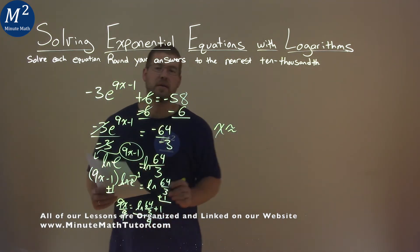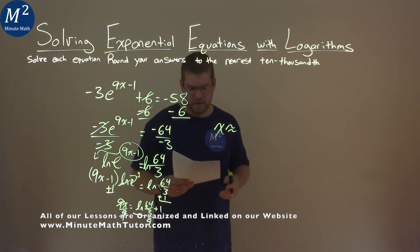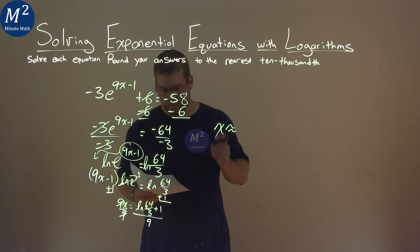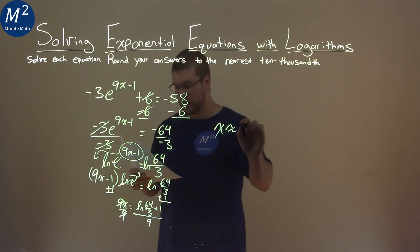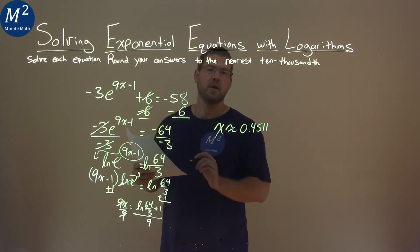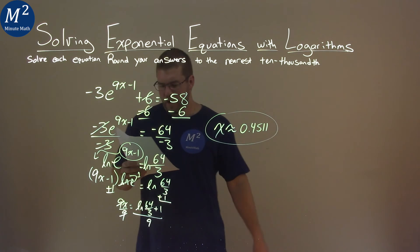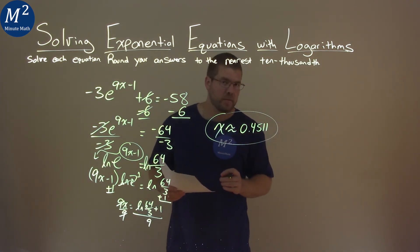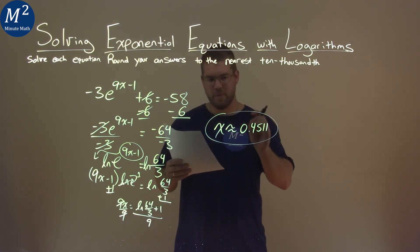We'll use our calculator here, it'll be approximate. The natural log of 64 over 3 plus 1, all divided by 9, comes out to be 0.4511 when rounded. And so our final answer here is x is approximately equal to 0.4511.